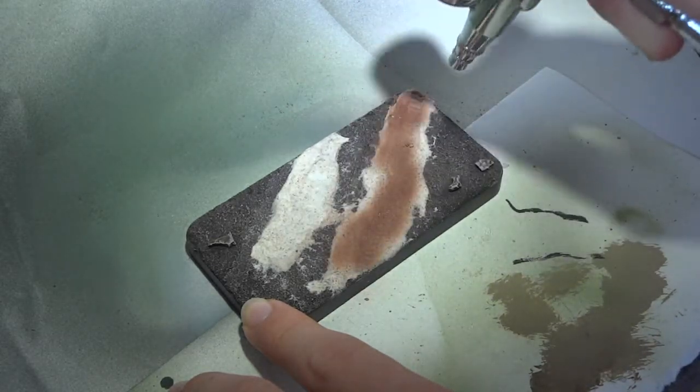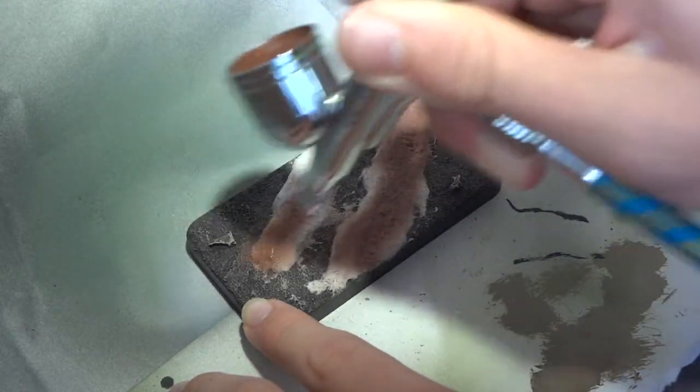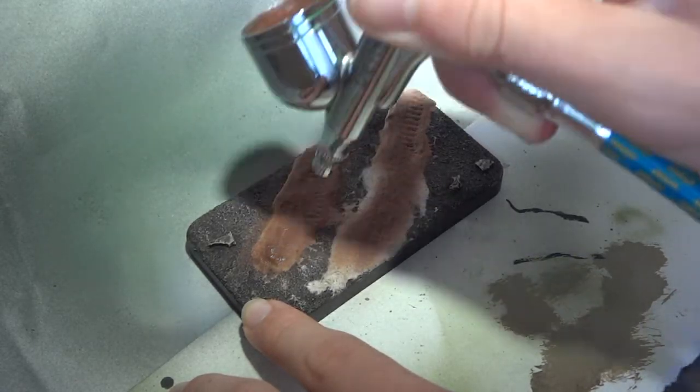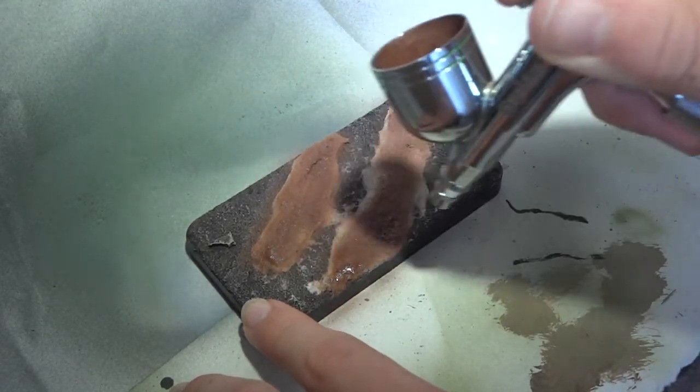The mud areas on the base are then base coated in a brown colour and then several layers of washes and inks are applied through the airbrush to give it some depth and an interesting tone.